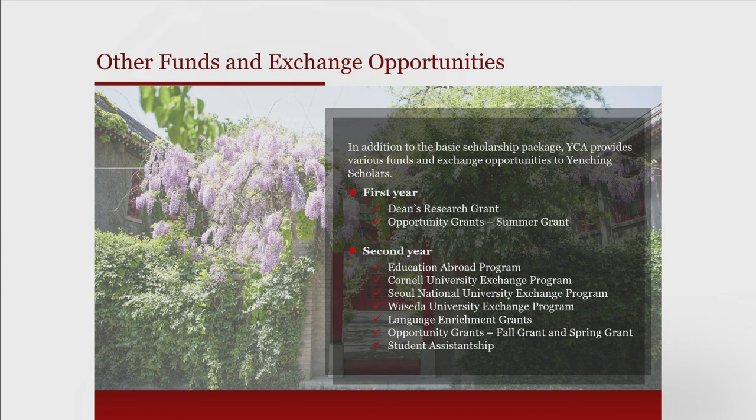There are multiple other forms of research and learning funding available at Yanjing Academy, most notably the Dean's Research Grant in the first year. At the end of the first and second year, we have other grants like opportunity grants and language learning grants—a colleague will tell you more about those. Yanjing scholars, both from mainland China and overseas, are also able to take part in exchange programs that Yanjing Academy has established with Cornell University, Seoul National University, and Waseda University in Japan, as well as Peking University's own exchange programs.